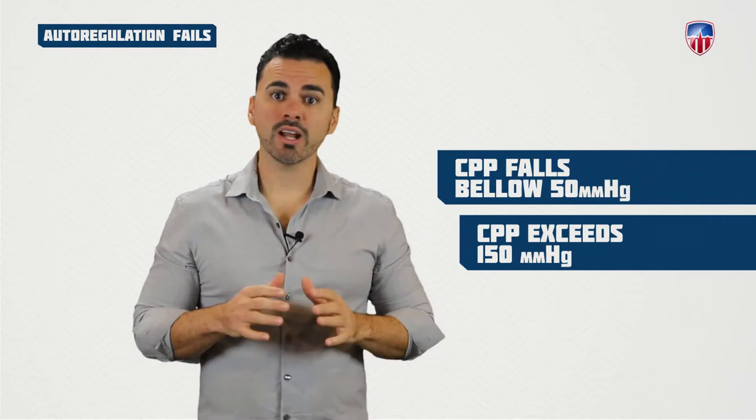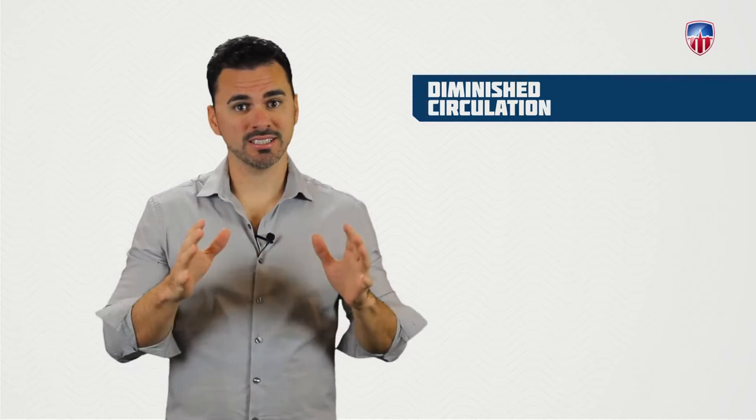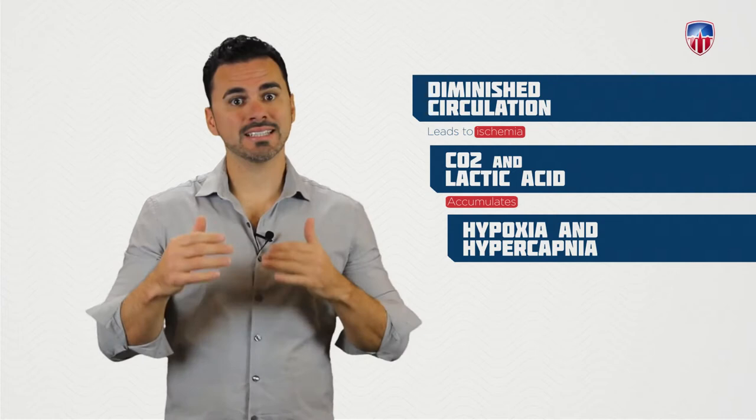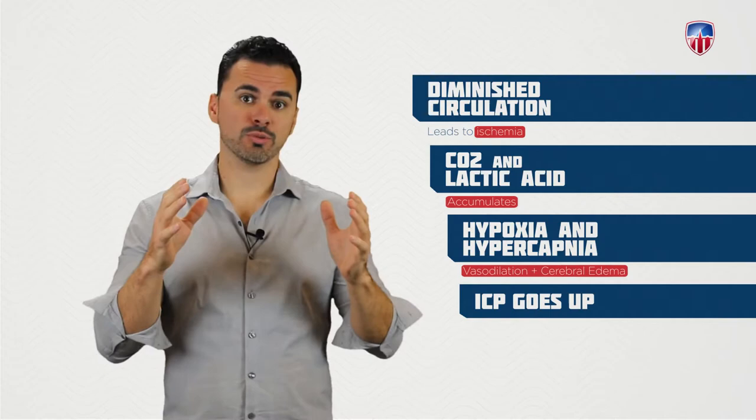When the brain loses its ability to autoregulate, pressure on cerebral vessels slows or impedes blood flow to brain tissue. This diminished circulation leads to ischemia where CO2 and lactic acid accumulate. Hypoxia and hypercapnia lead to vasodilation, increasing blood volume and producing brain edema. ICP then rises, compressing cerebral vessels, causing further ischemia, and ultimately progressing to brain death.